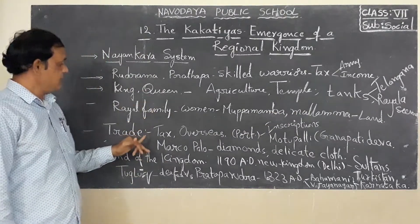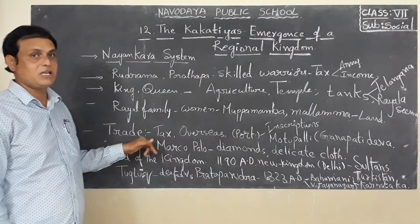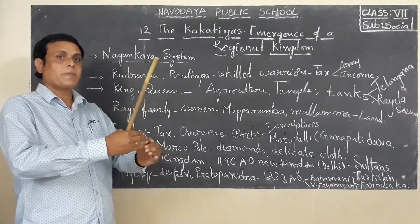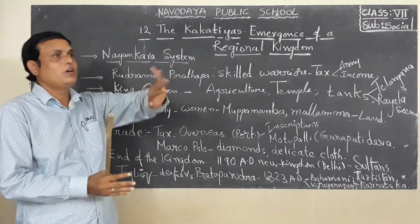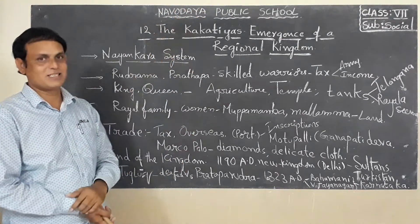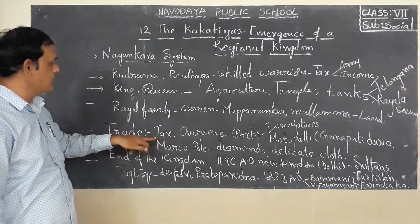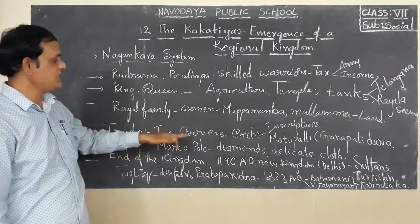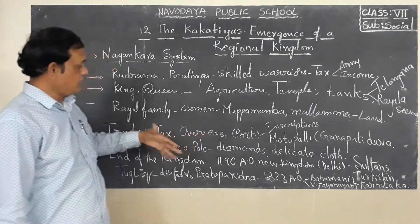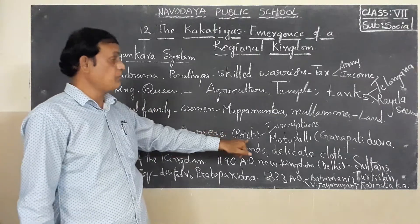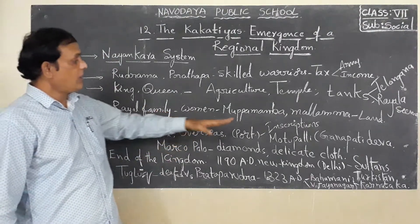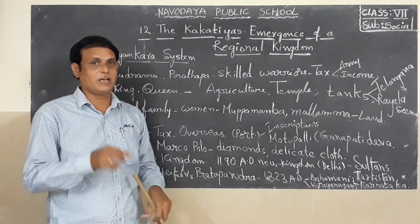In this period, trade was very important. They were trading not only within the country but also in other countries and kingdoms — overseas, meaning through seas and oceans. These kings laid tax over the traders dealing in such overseas trade. Through these activities they got income to support the administration of their kingdom. They also constructed ports. They laid inscriptions on stones to record that they had taxed the traders.